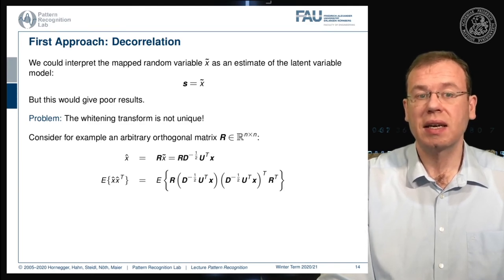So we do the expected value of X hat times X hat transpose. This gives us again a kind of covariance matrix. We apply the same transformation as previously. We see that the inner part we already know cancels out to the identity matrix. And then we have R times the identity matrix times R transpose. And this is nothing else than the identity matrix.